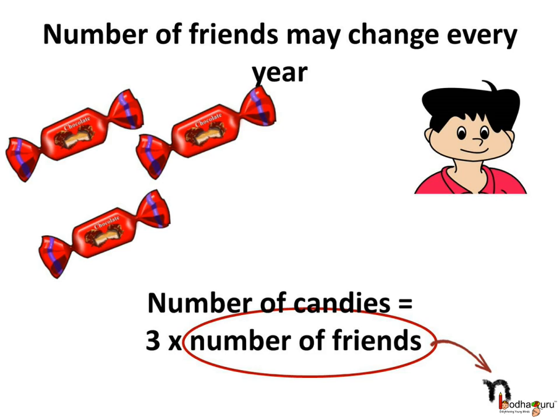So the number of candies he needs every year on his birthday may change as the number of his friends may change. But as he always wants to give only 3 candies to each one of them, we can say the number of candies he needs every year is equal to 3 times the number of his friends. Let us denote the number of friends by a literal number n. The number of friends may change, so the value of n may also change. Hence, n is a variable.